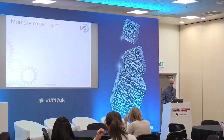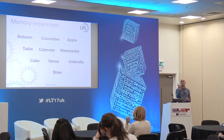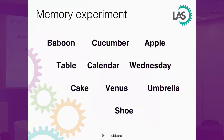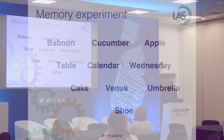So what I'd like you to do now is write down as many of those words as you can remember. Now I want you to mark how you did — I'll read these out. Baboon. Cucumber. Apple. Table. Calendar. Wednesday. Cake. Venus. Umbrella. And shoe.